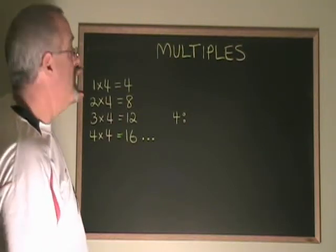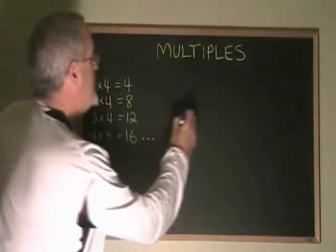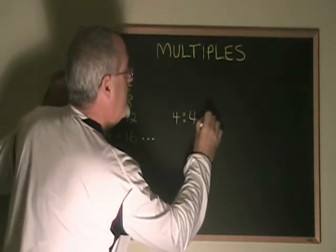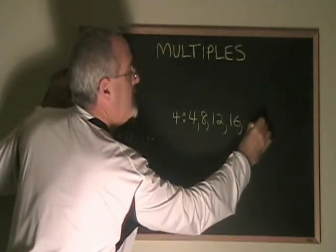We can list the multiples of 4 like this. I like to put a 4 and a colon and then list the numbers with commas: 4, 8, 12, 16, and so on.